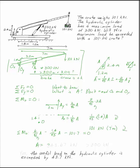That gives you A is 343.67 kN. Well, our hydraulic cylinder had a maximum useful load of 300 kN. That means it broke. So the answer to the question is yes. The maximum load will be exceeded by 43.7 kN.